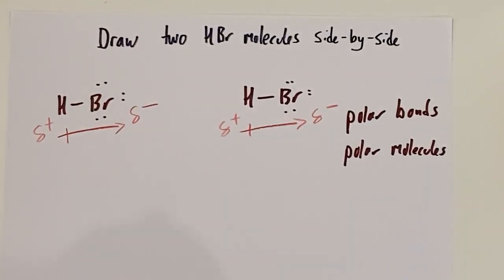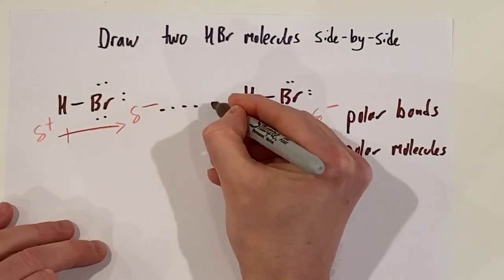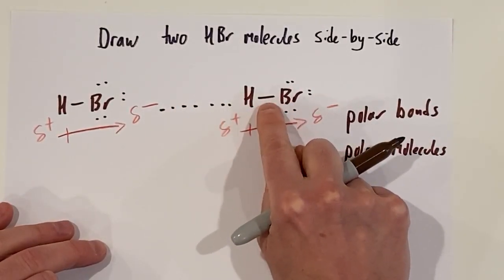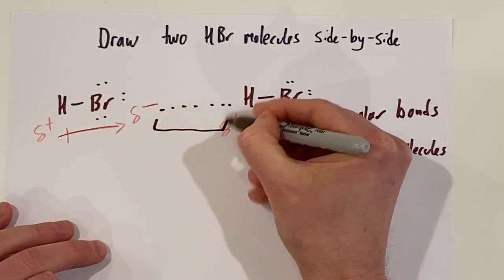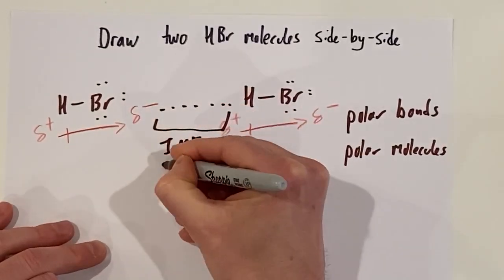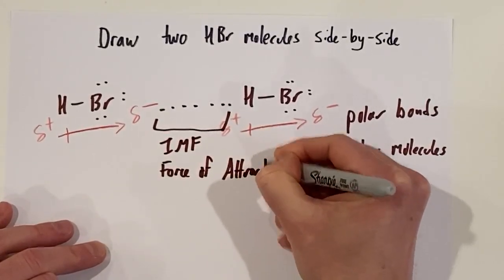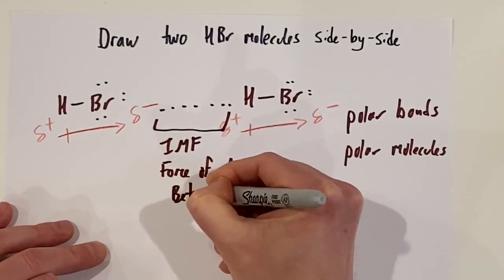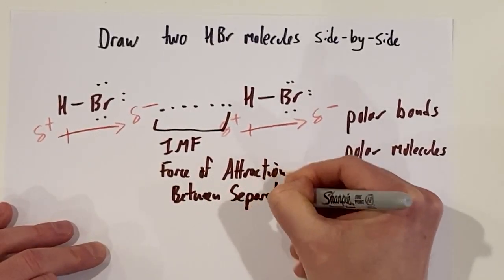The way we will identify an attraction between separate molecules is with a dotted line. Notice, the force holding these two atoms together, that covalent bond, is going to be a solid line. This is an IMF. Why? It is a force of attraction between separate molecules.